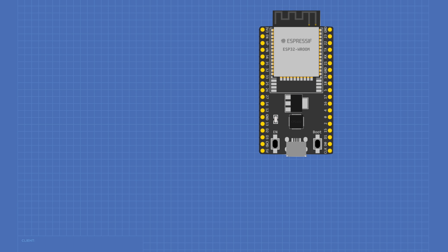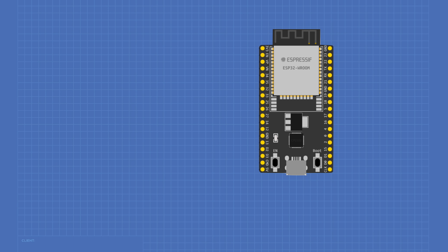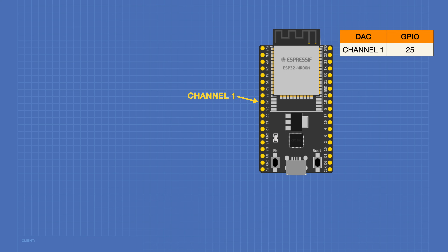For all of our experiments, we will require an ESP32 module — you can use pretty well any ESP32 module you have. On that module, we're going to be interested in three pins: channel 1 of the DAC on GPIO pin 25, channel 2 of the DAC on GPIO pin 26, and one of the many ground connections on the ESP32 module.